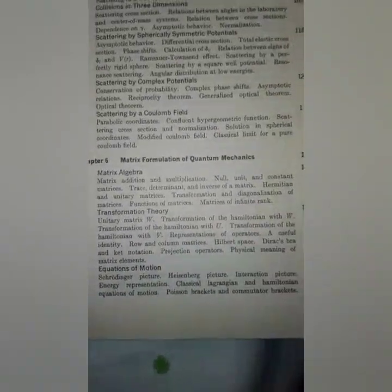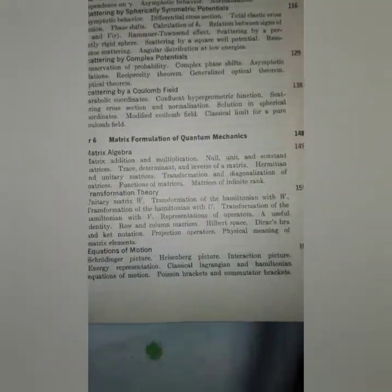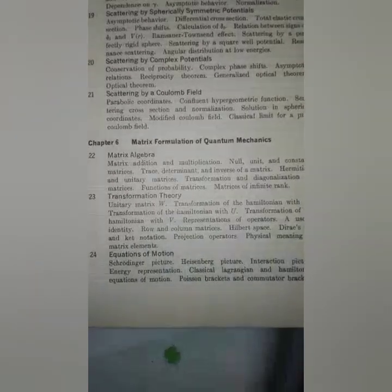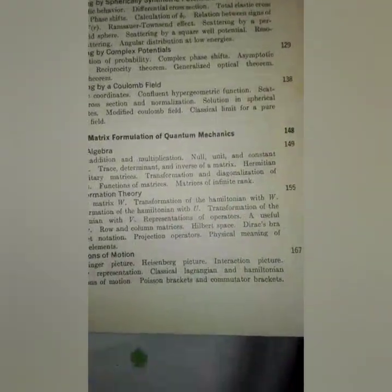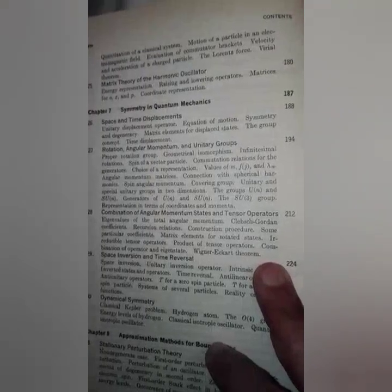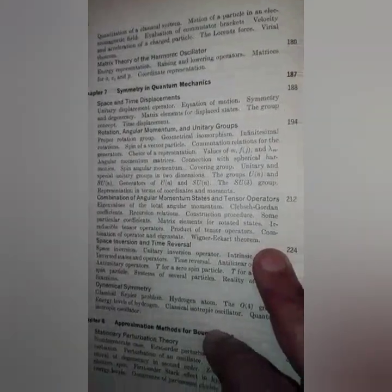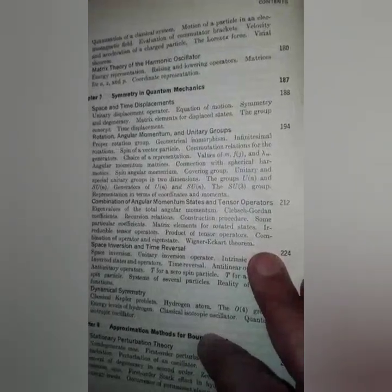Physical meaning of matrix elements, equation of motion, Schrödinger picture, Heisenberg picture, interaction picture, energy representation, classical Lagrangian and Hamiltonian equations of motion, Poisson brackets and commutator brackets, quantization of a classical system, motion of a particle in an electromagnetic field, evaluation of commutator brackets, velocity and acceleration of a charged particle.